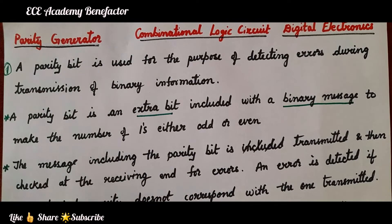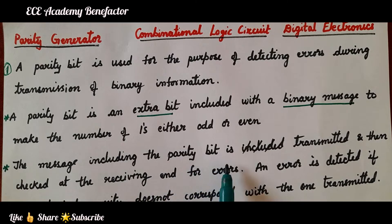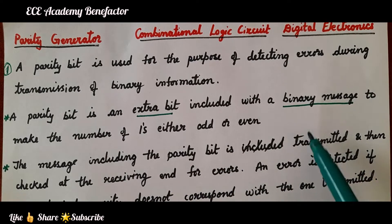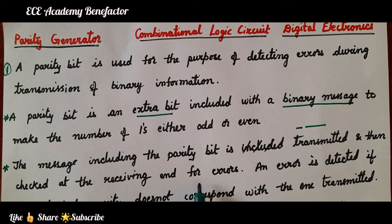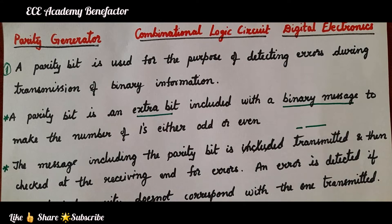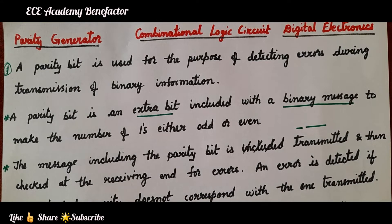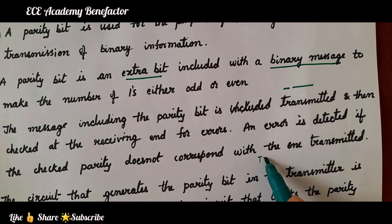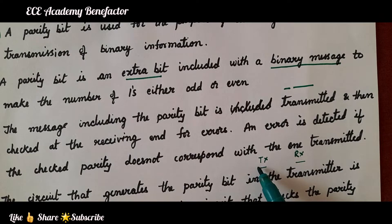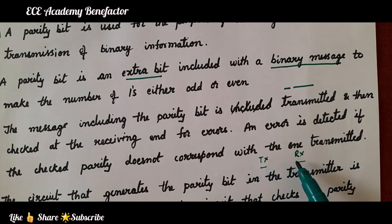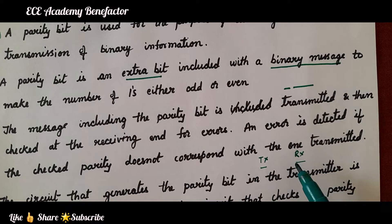The message including the parity bit is transmitted and then checked at the receiving end for errors. An error is detected if the checked parity does not correspond with the one transmitted. At the transmitter, the message comprises the binary message along with the parity bit, and at the receiver we check whether the received message is correct or contains an error.